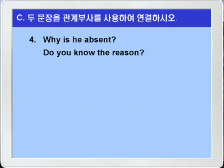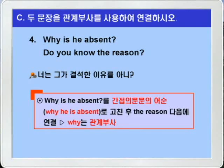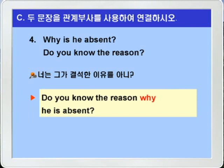4번. 'Why is he absent? Do you know the reason?' 왜 그는 결석했느냐? 너는 그 이유를 아니? 두 문장을 합쳐보면 너는 그가 결석한 이유를 아니? 이런 식이 되겠죠. 따라서 선행사가 the reason이 되고 'Why is he absent?'를 간접 의문문의 어순으로 만들어서 the reason 뒤에다 연결시키면 되겠습니다. 'Do you know the reason why he is absent?'